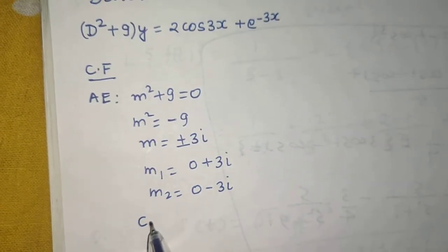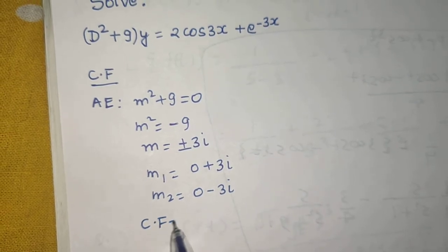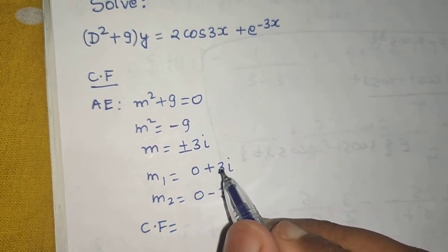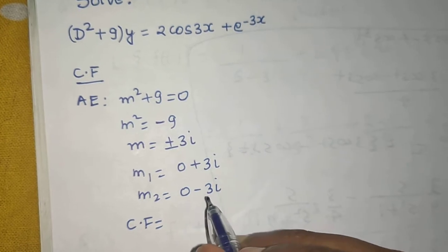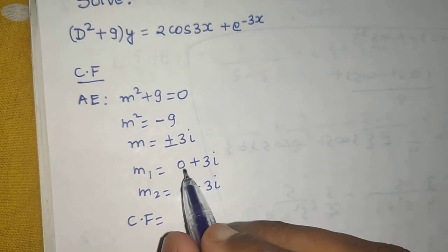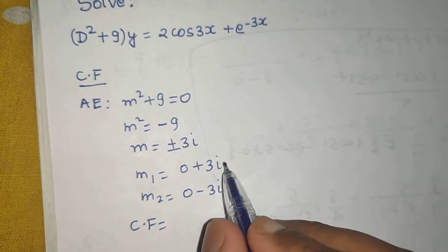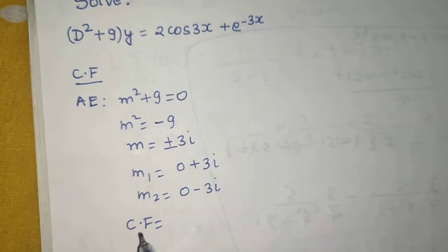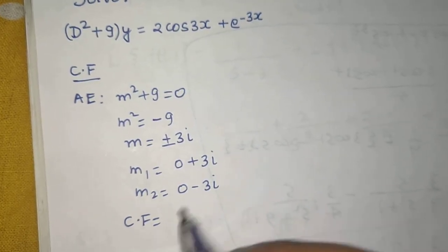So in case the roots are conjugate complex numbers, we write the complementary function as e power ax. This is of the form a plus iota b and a minus iota b. So we write the complementary function as e power ax.